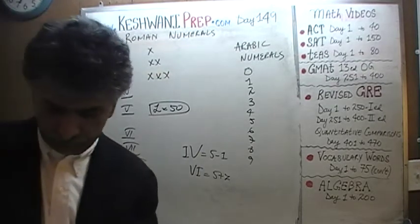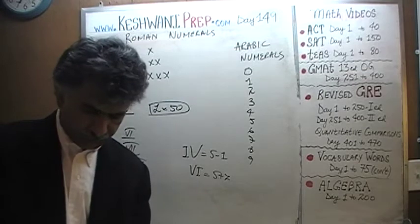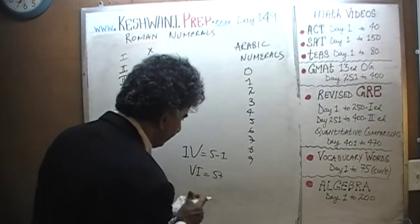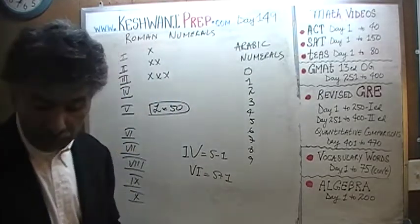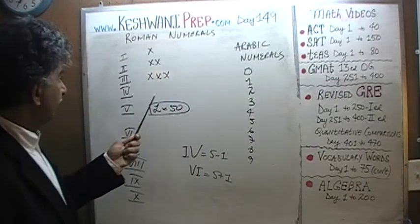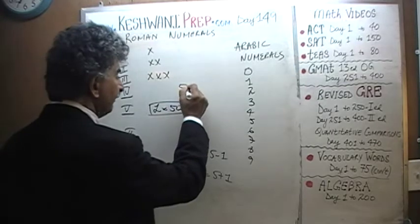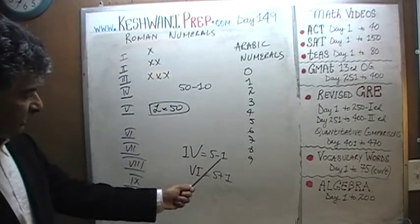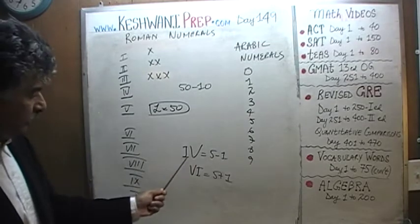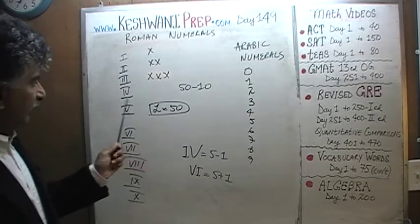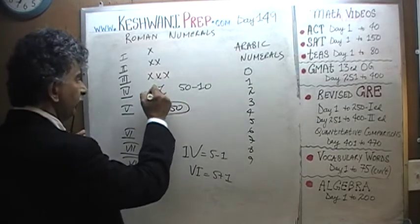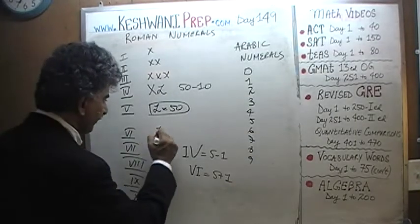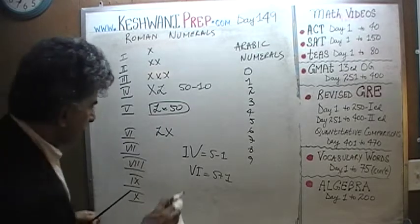The same exact rule applies as we go into higher values. If you want to write 40, it is written as 50 minus 10. Just like 5 minus 1 — you write the smaller number to the left. So 50 is L, and 40 is XL. 60 is L plus X. 70 is 50 plus 10 plus 10. 80 is L plus X, X, X — 50 plus 30.